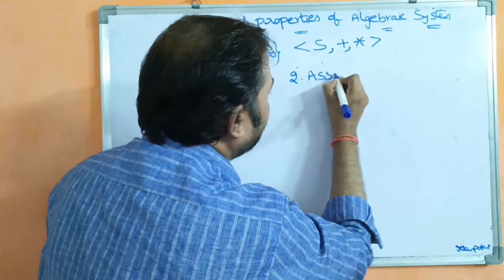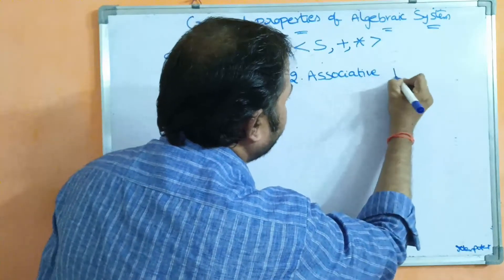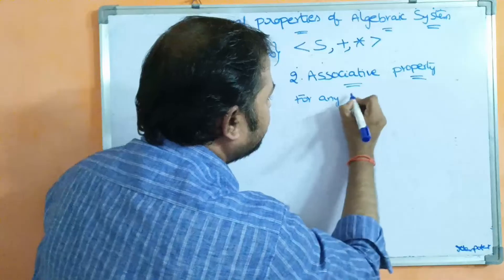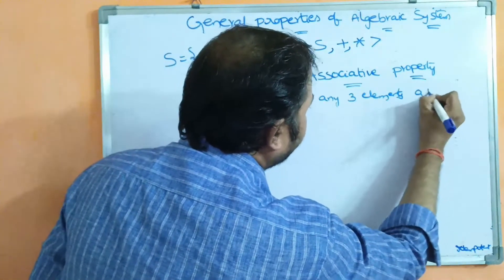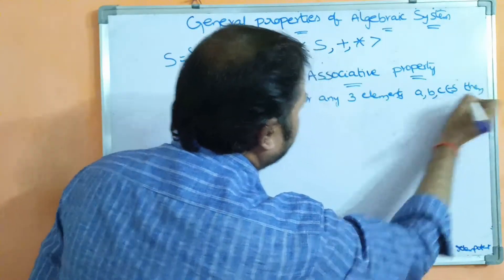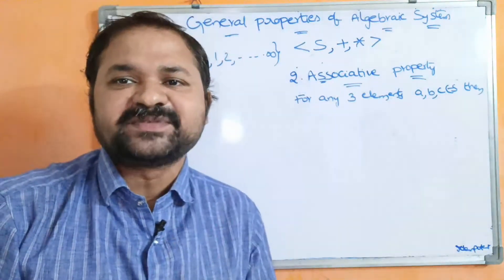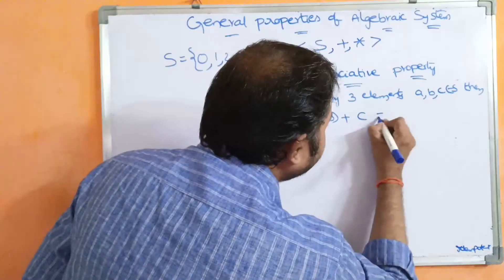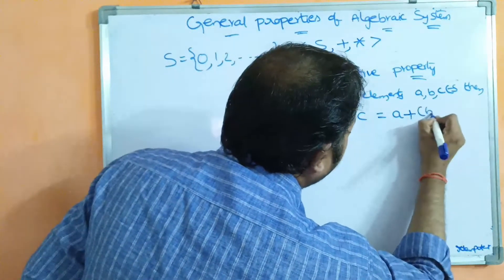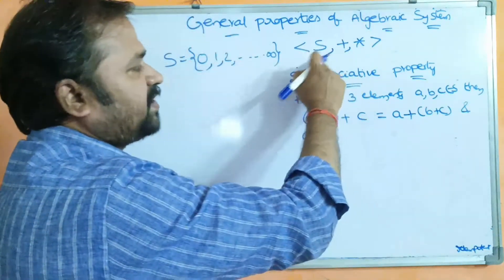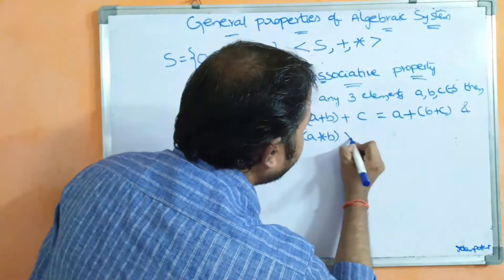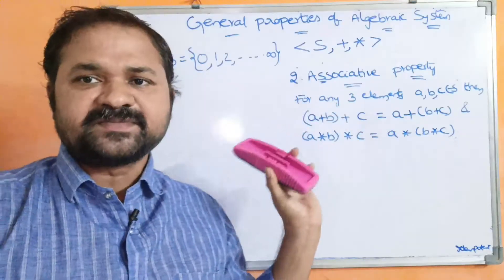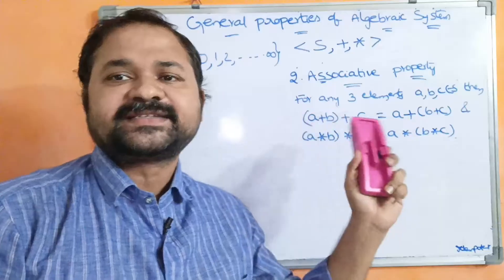The second property is associative property. Associative property means we have to take 3 elements from the set. For any three elements a, b, c belonging to S, associative property states: (a plus b) plus c equals a plus (b plus c), and (a star b) star c equals a star (b star c). If both are satisfied, the algebraic system satisfies associative property.